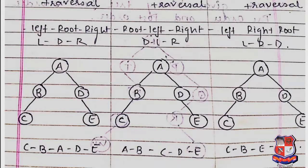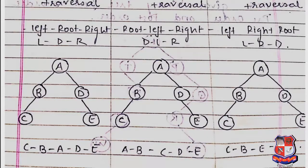After traversing B's subtree, we move to the right child of A, which is D. D becomes the root of its subtree. D has no left child, so we move to the right child E. The pre-order traversal is: A, B, C, D, E.